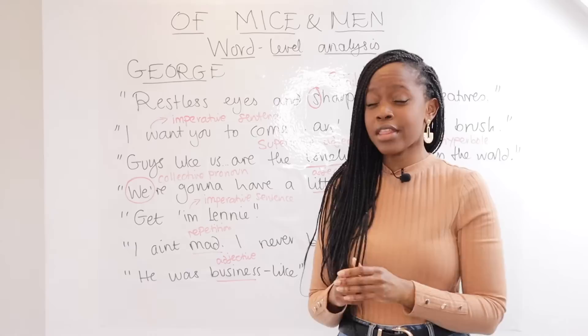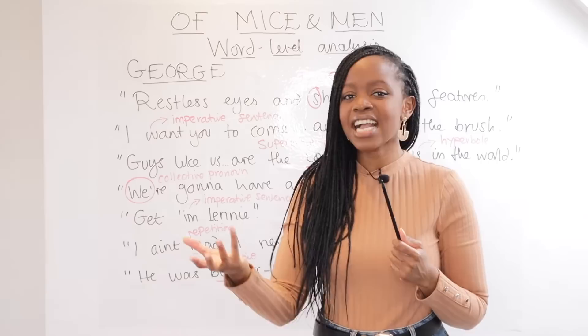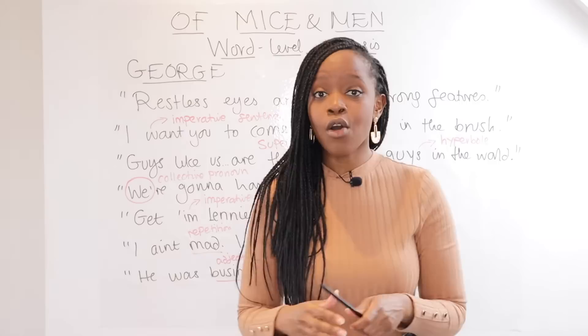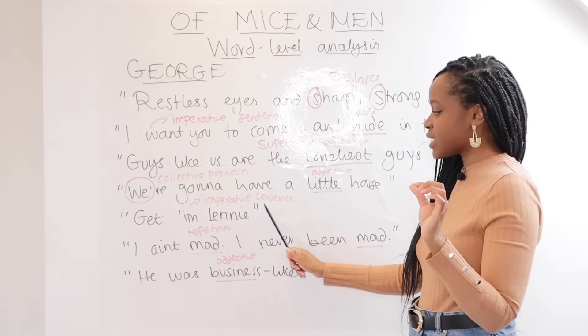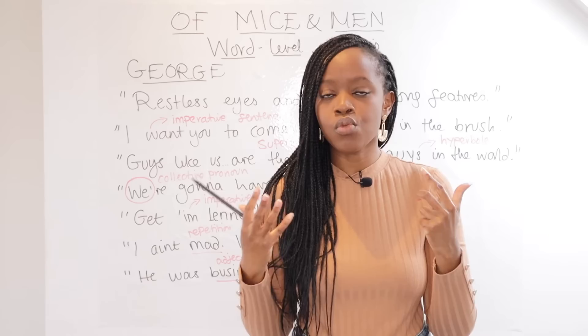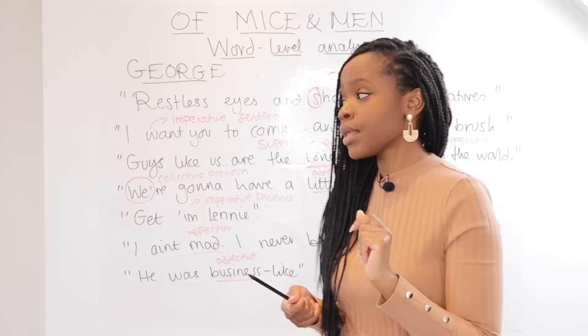When Curley turns on Lenny — frustrated and jealous of Slim's power — he attacks Lenny, who doesn't know what to do. Lenny only acts once George tells him: 'Get him, Lenny,' causing Lenny to crush Curley's hand. The word-level analysis is again an imperative sentence — George giving an order. This illustrates that in this Darwinian environment, George pulls the levers and tells Lenny what to do, despite Lenny being physically far stronger.